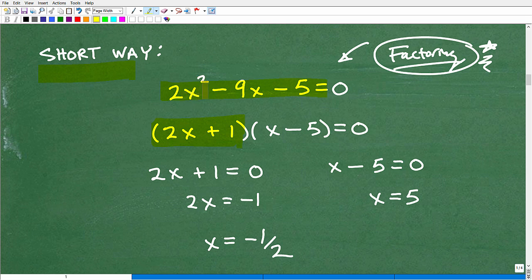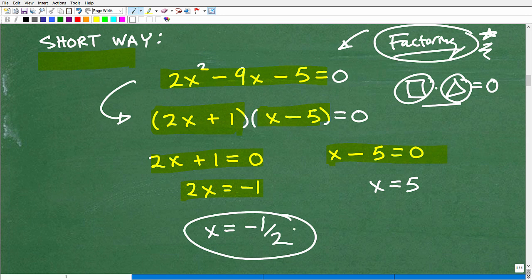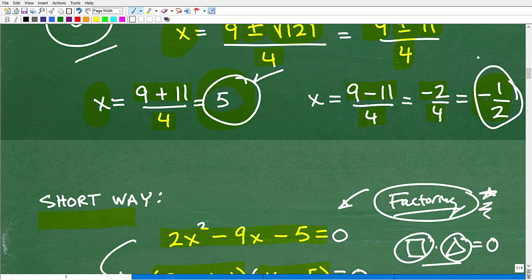I can factor 2x² - 9x - 5 as (2x + 1)(x - 5). This is awesome because we can use the zero product property. If this thing times this thing equals zero, one or both must be zero. We set 2x + 1 equal to zero and x - 5 equal to zero and solve. When I do that simple algebra, I get x = -1/2 and x = 5. These should look familiar because these are the same answers - 5 and negative 1/2.